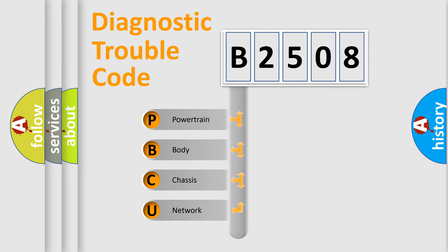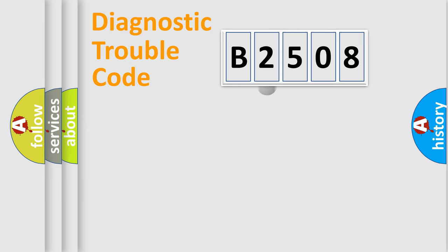We divide the electric system of automobile into four basic units: powertrain, body, chassis, and network. This distribution is defined in the first character code.